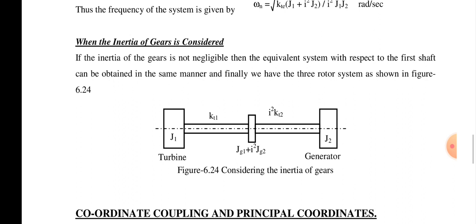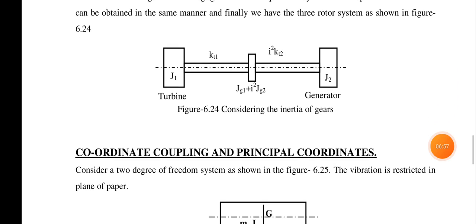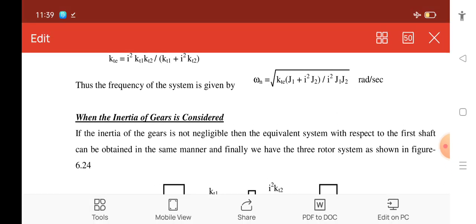So far we considered the case where gear inertia is neglected. If the inertia of the gear is not neglected, the equivalent system is analyzed as a three-rotor system. When gear inertia is neglected we use a two-rotor system; when gear inertia is considered, we use a three-rotor system, with the gear inertia term (Jg1 + i²·Jg2) added between the turbine J1 and generator.